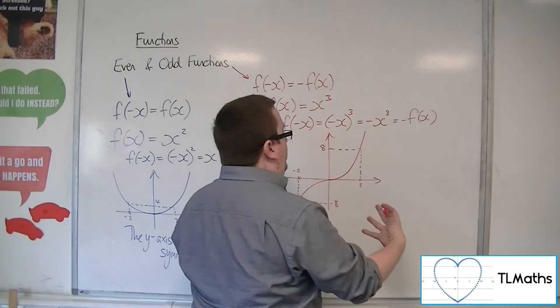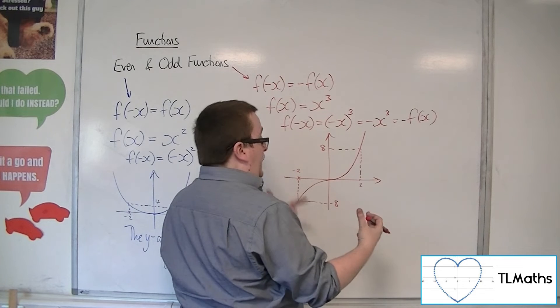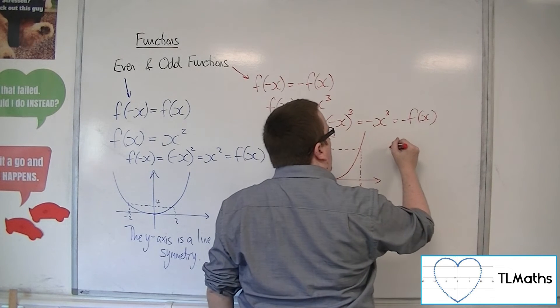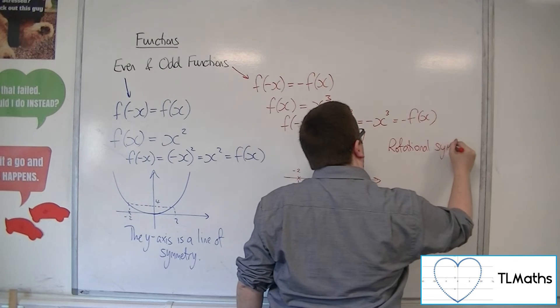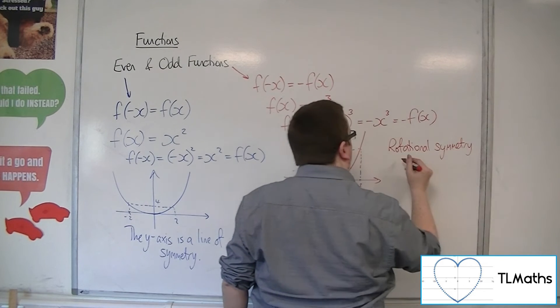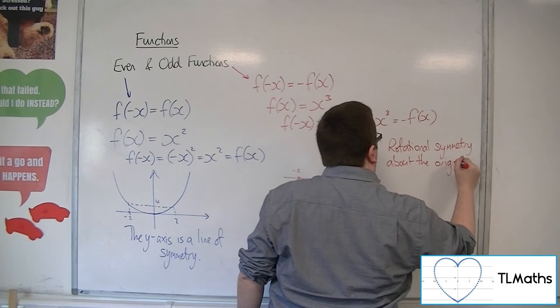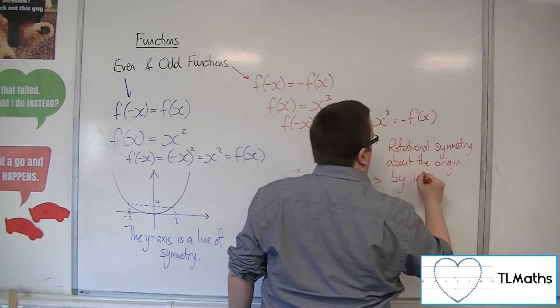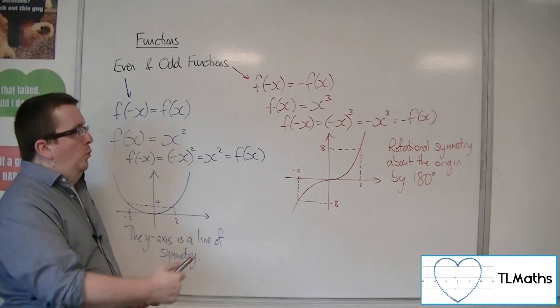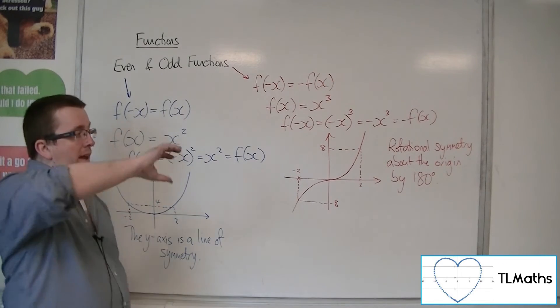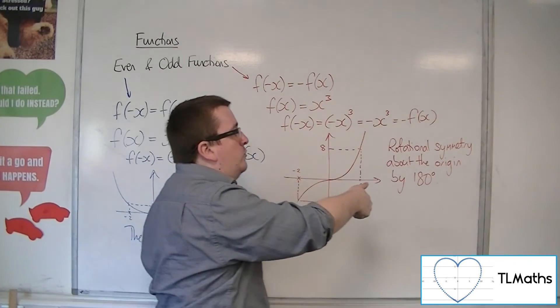And so, what we can say is that for odd functions, they have the property of having rotational symmetry about the origin by 180 degrees. So in all cases for odd functions, they are the same graph rotated 180 degrees about the origin.